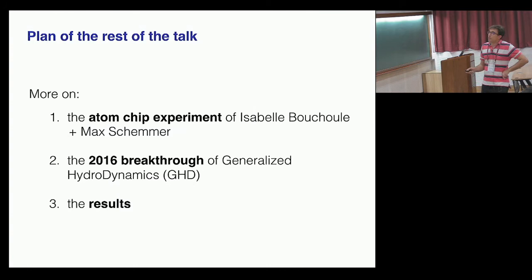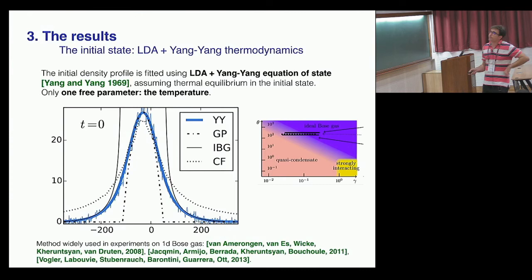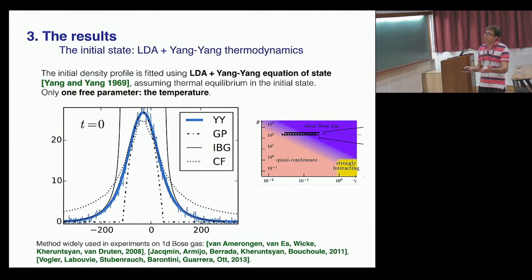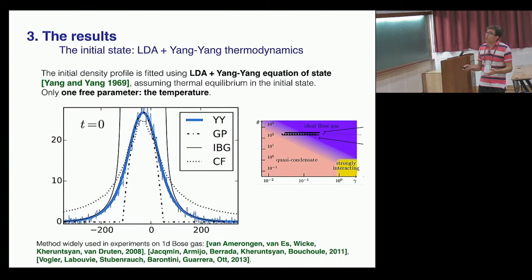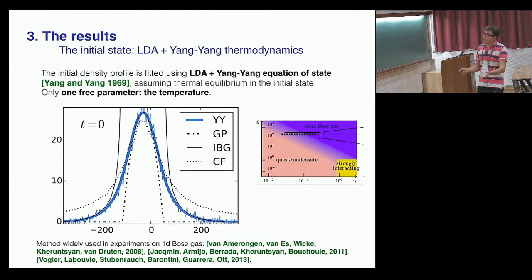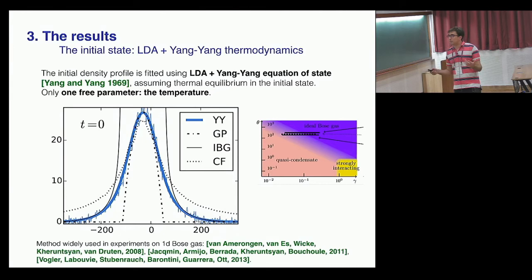Now I'll give a few more details about the experimental results. To describe the evolution of the atomic cloud, we first need to understand the initial state. There's some cooling process, and at time zero you want to know the initial state of your cloud.